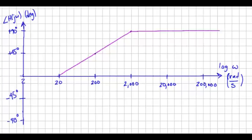We also have a zero at 2000. So identify the decade below, decade above, sketch that in there. And of course it was zero before, and then it's 90 degrees after that.